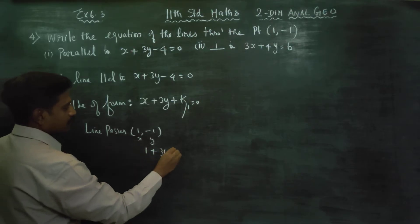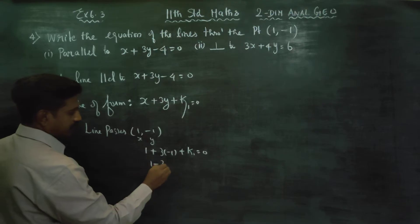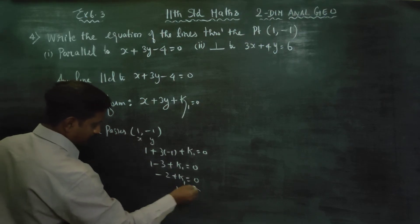1 minus 3 plus k1 equals 0. Minus 2 plus k1 equals 0. Therefore, k1 equals 2.